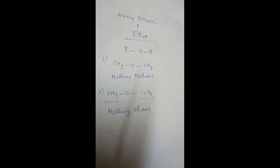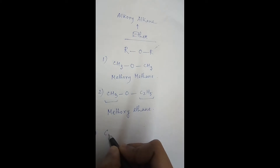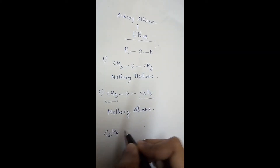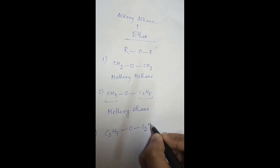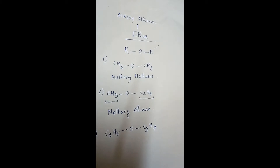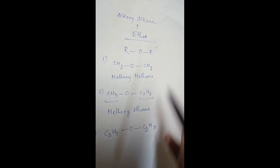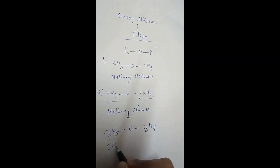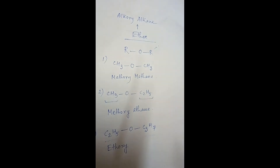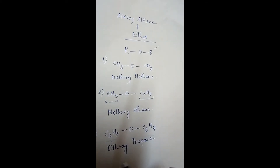Take another example: C₂H₅OC₃H₇. Here both R and R prime are different — one is the ethyl group and one is the propyl group. The ethyl group has two carbons and the propyl group has three carbons, so the ethyl group is the smaller chain and becomes the alkoxy part — we write ethoxy. The propyl group is the longer chain, so it is the alkane part — propane. The full IUPAC name is ethoxypropane.